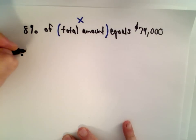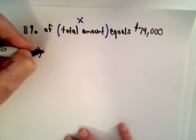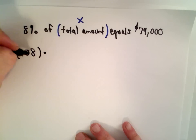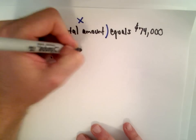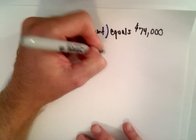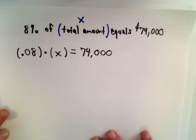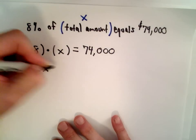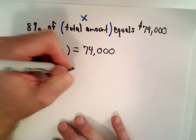8%, we can write that as .08. Of, we've seen that we can write of as multiplication. So .08 multiplied by the total amount, which we're calling x, that equals $74,000. Okay, so I'm going to write this one more time. It says .08 multiplied by x equals $74,000.